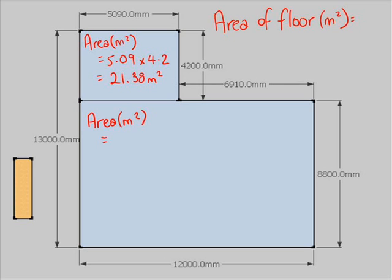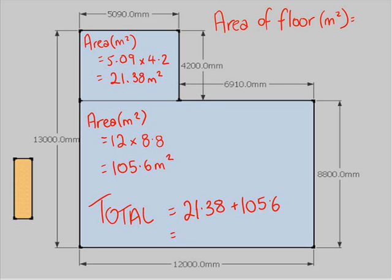The area of the one beneath it is going to be 12 by 8.8 metres, which is going to give you a total of 105.6 metres squared. The total of those ones all together, 21.38 plus 105.6, gives us a total floor space of 126.98 metres or roughly 127 metres, which we'll put at the top.